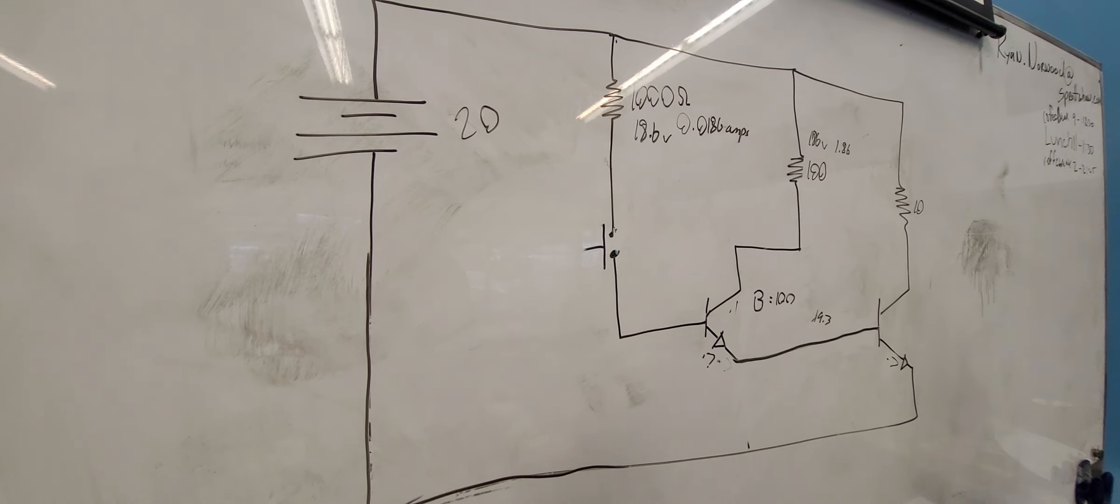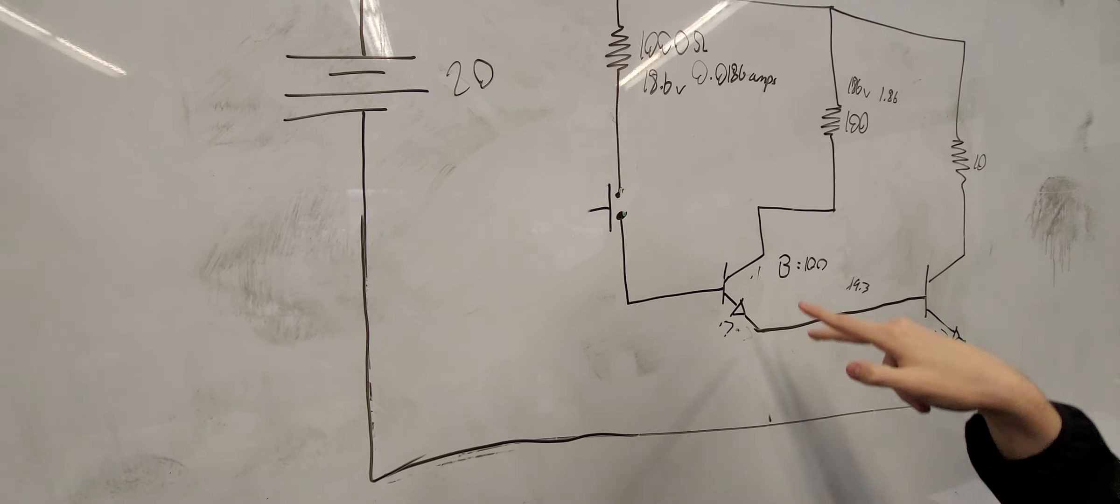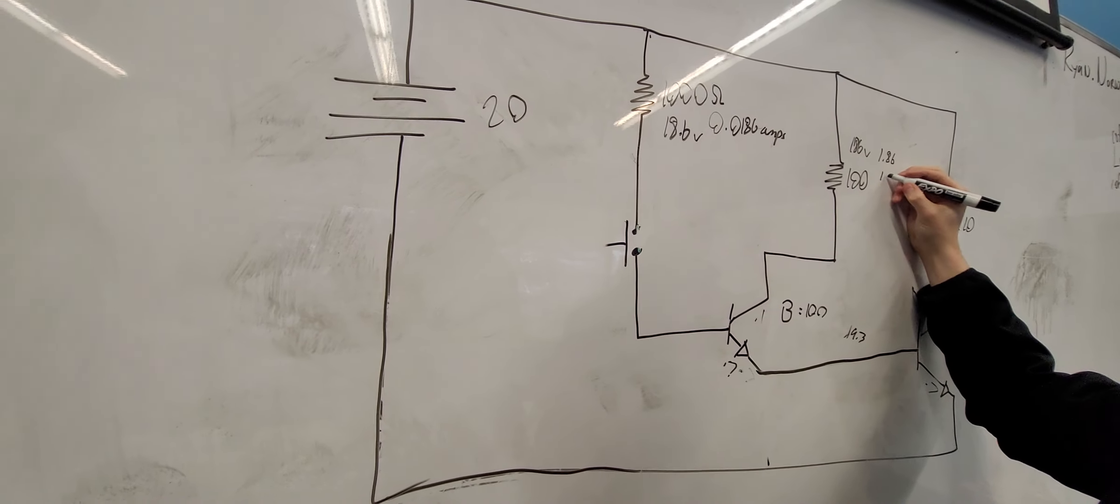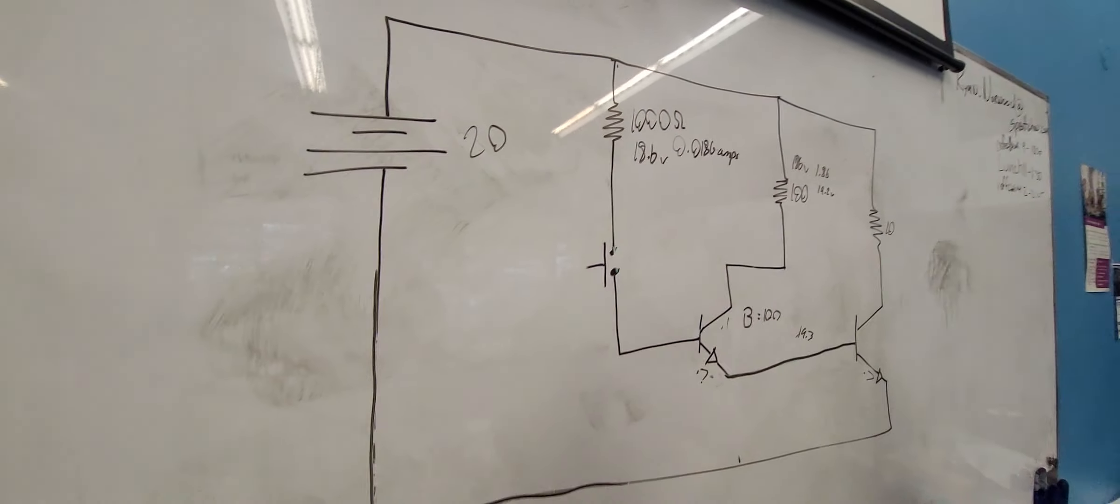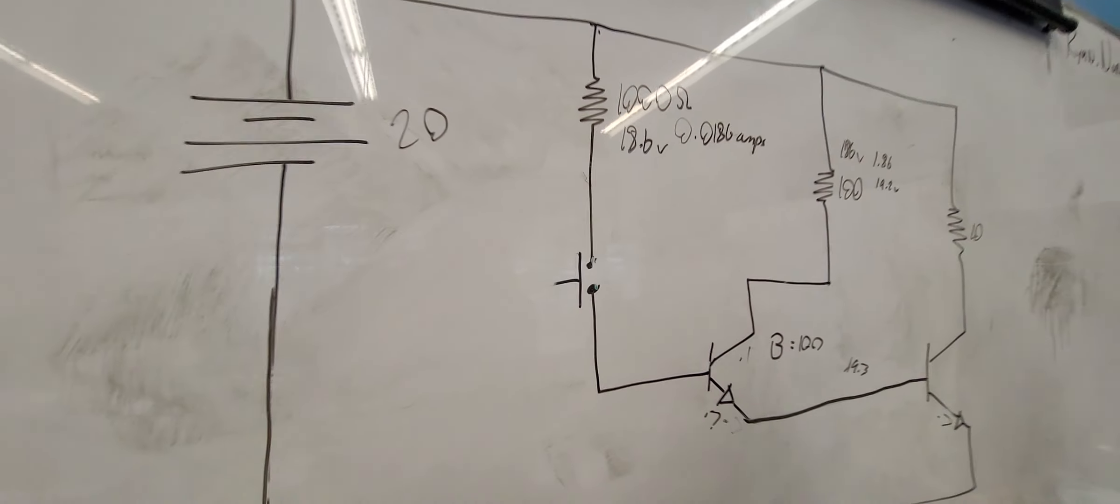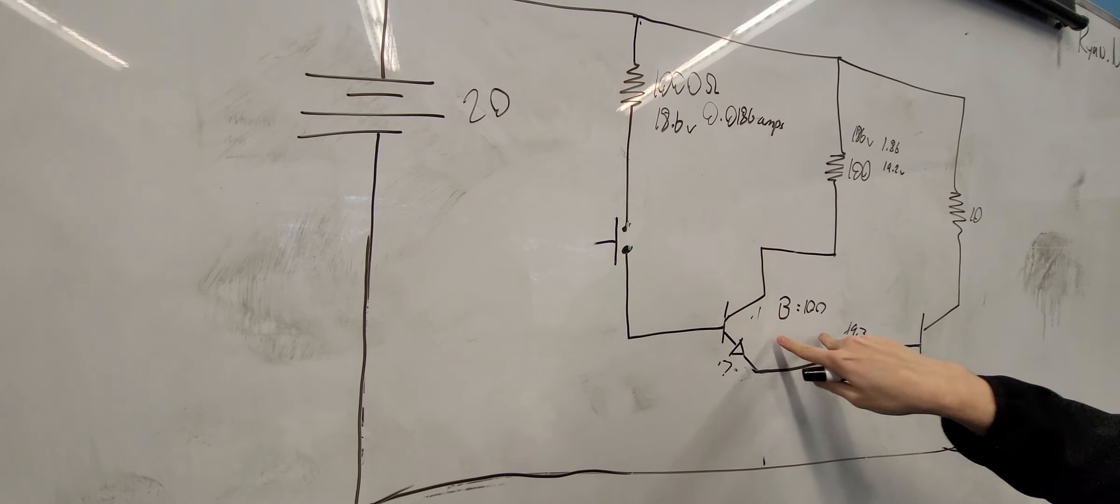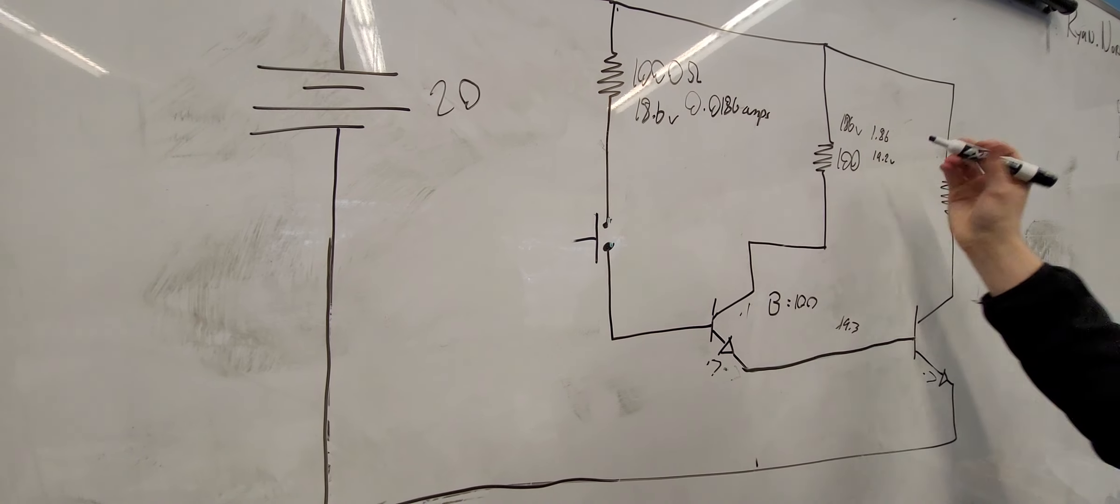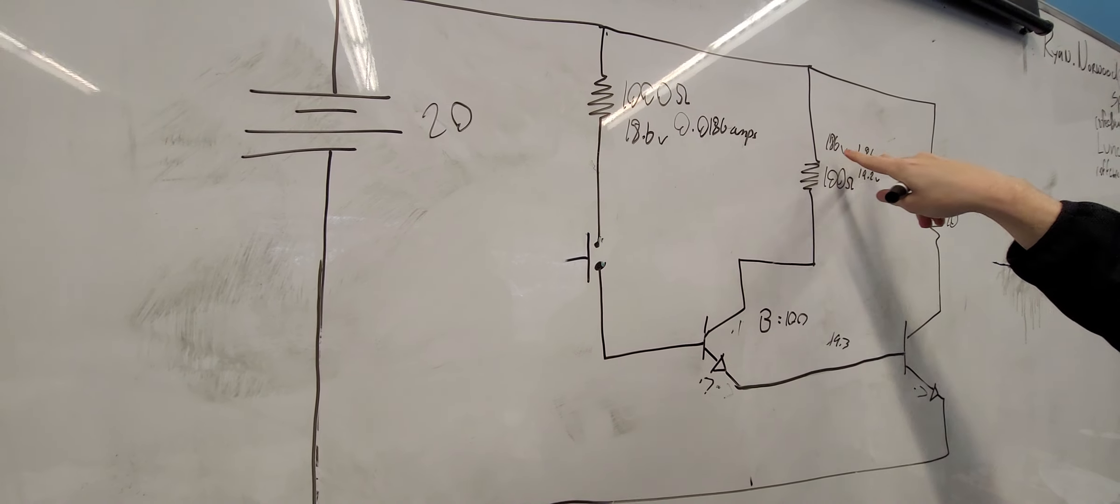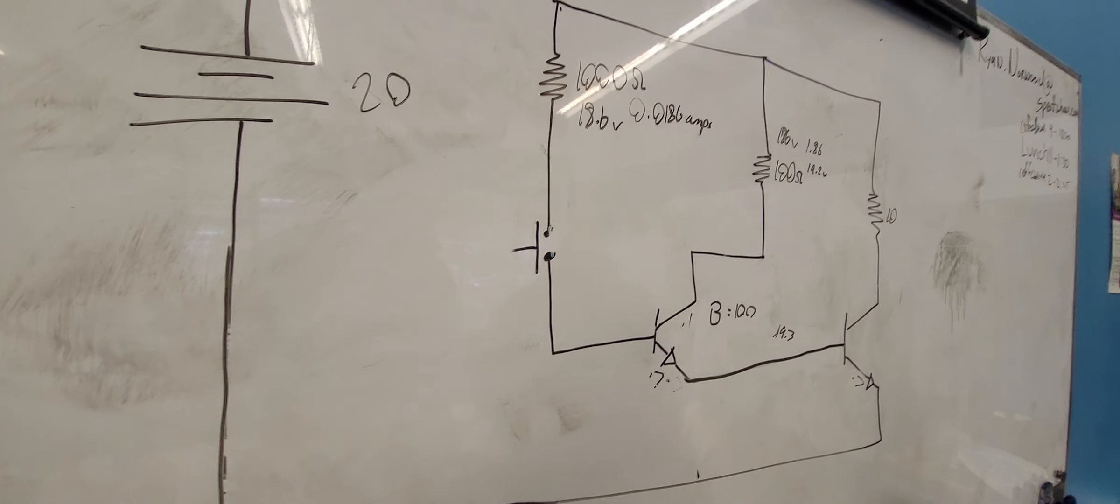So this is going to be 1.86 amps, and then this is going to be 186 volts. This is obviously way above 20 volts. So what this is going to amount to is this going to have a voltage drop here of 0.1. Which, if I would imagine, is just going to be, this is like the source kind of into this one.